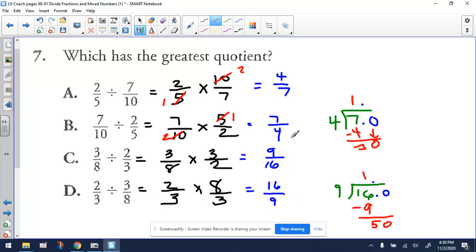Alright so if we take a look at all these blue values, the first thing we want to look for is we want to eliminate the ones that are less than 1. How do we know it's less than 1? If the numerator is less than the denominator then we're talking about a value less than 1. So that's this and it's this.